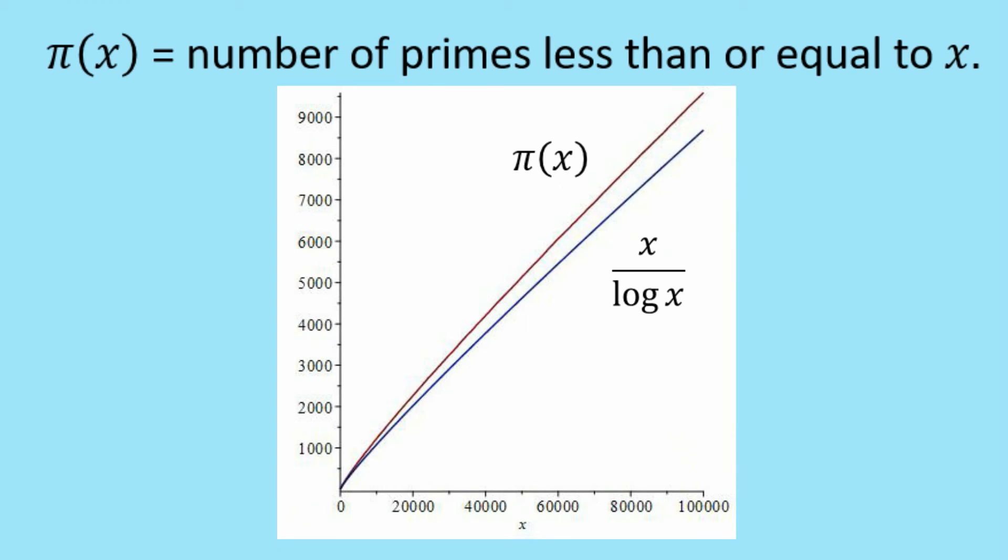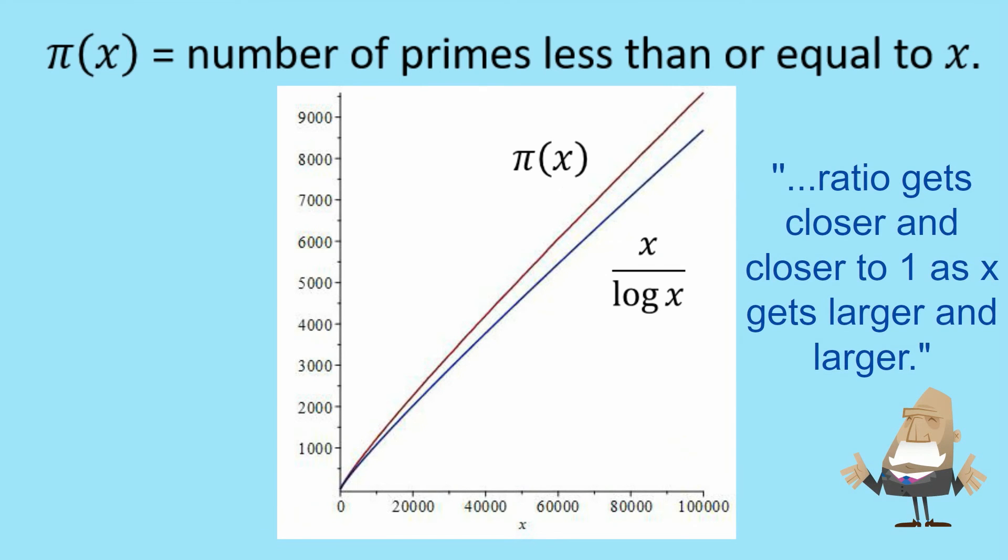So a mathematician said that they were really looking for a function to approximate π(x) in the sense that they want the ratio of the two to get closer and closer to 1 as x gets larger and larger.